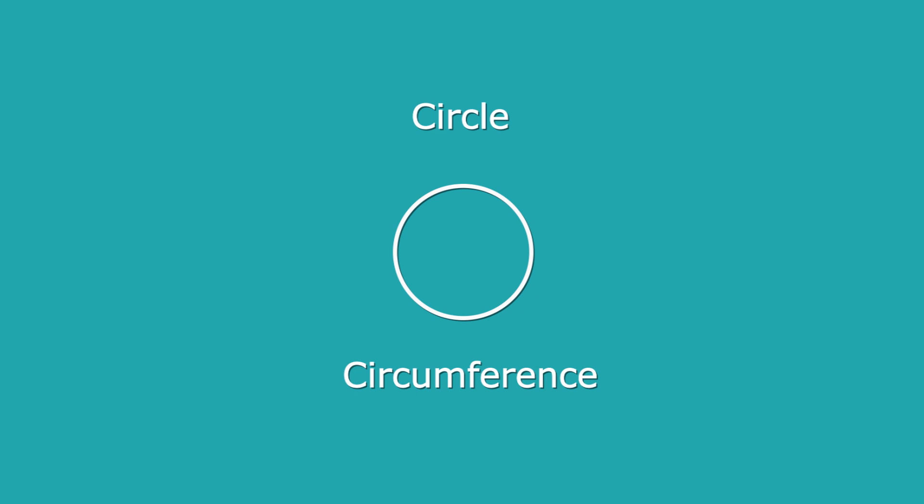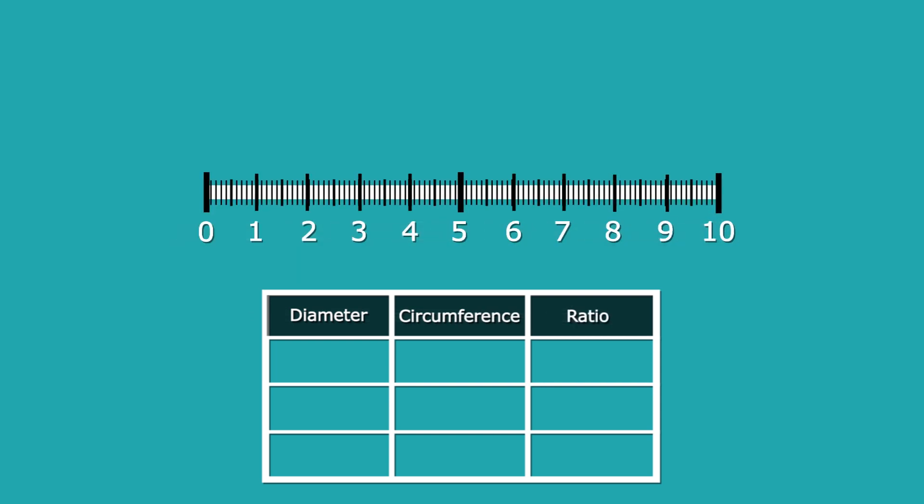So, let's take a deeper look into circumference and diameter. We're now going to look at the diameter and circumference of three different circles. Let's put in a little table, so we can record what we see. I'm also going to create a ruler, so we can measure the diameter and circumference of our circles.